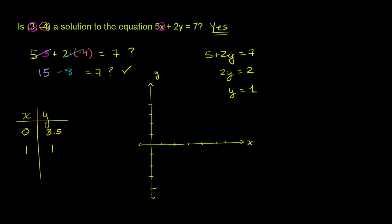So let's plot these points. 0, 3.5. When x is 0, y is 1, 2, 3, 0.5. When x is 1, y is 1. When x is 1, y is 1. And so if we were to draw this line...